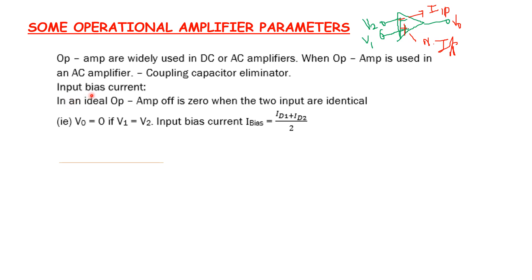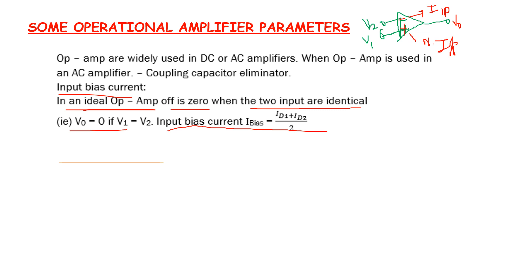Next is input bias current. In an ideal operational amplifier, the output is 0 when the two inputs are identical — that is, V0 = 0 if V1 = V2. The input bias current formula is: I_bias = (Id1 + Id2) / 2.